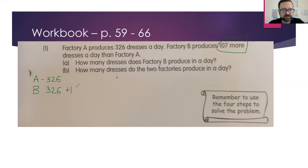And Factory B produces 107 more than Factory A. So I'm gonna make a model here. Factory B produces 107 more. So we know how much Factory A makes: 326. And the word more is keying me into the fact that this is an addition problem. All we need to do is 326 plus 107, and that will let us know how many dresses Factory B makes.